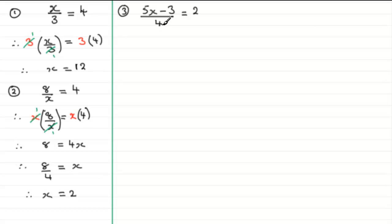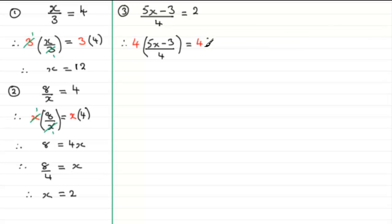We need to get rid of the 4, so we multiply both sides by 4. On the left we get 4 times (5x minus 3) over 4 — the 4s cancel, leaving 1 times (5x minus 3), which is just 5x minus 3. On the right we have 4 times 2.